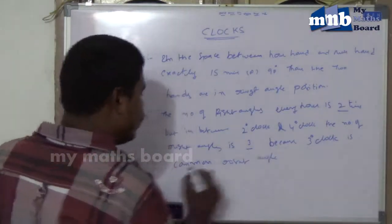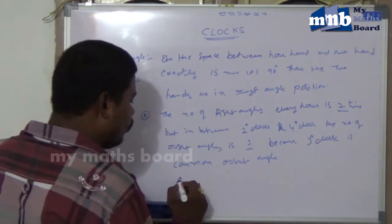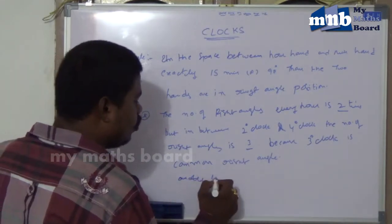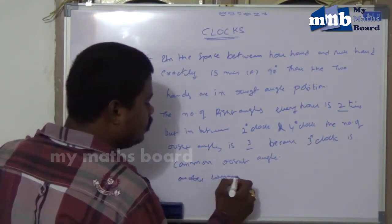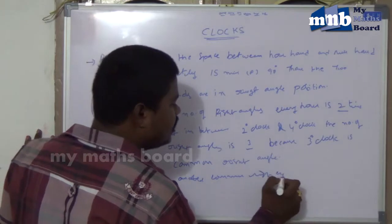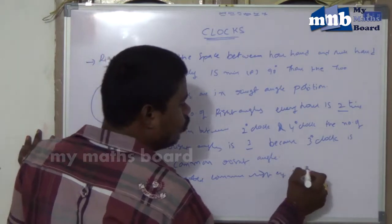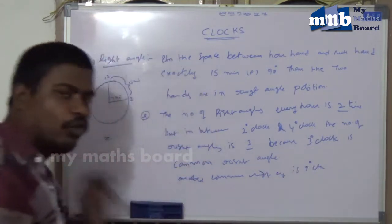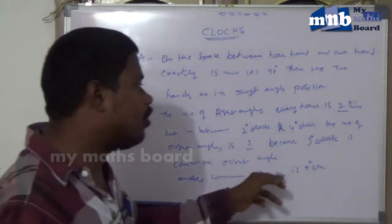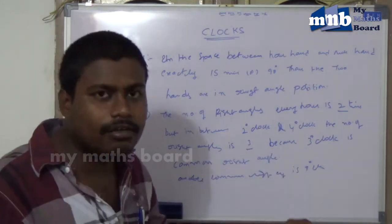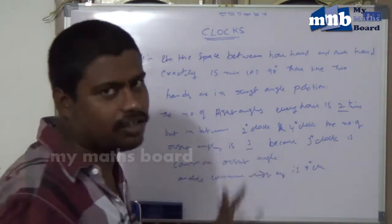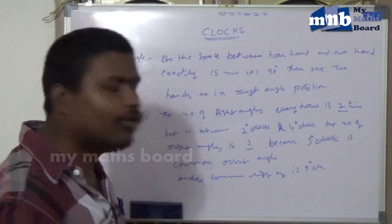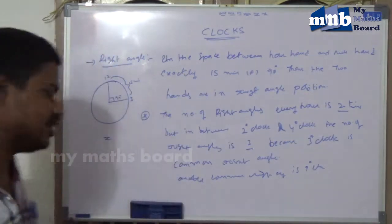Another common right angle position is nine o'clock. Three o'clock and nine o'clock are not countable because these are all common right angle positions.